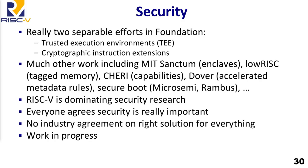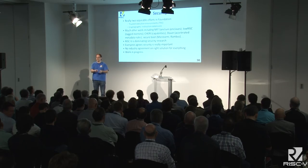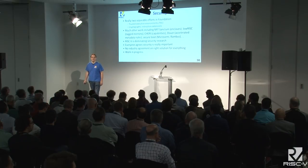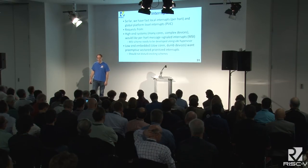On security: there have been two separate efforts in the foundation — trusted execution environments and cryptographic extensions — bundled into one group. RISC-V has become a very popular platform for security architecture work, primarily because it's simple and open. Proprietary closed systems don't tend to be secure; you need something that gets inspected by experts. There's a lot of work in the community here. Everybody agrees security is really important, but nobody knows what the definitively right thing is — this is very active work in progress across the whole industry, not just in RISC-V.